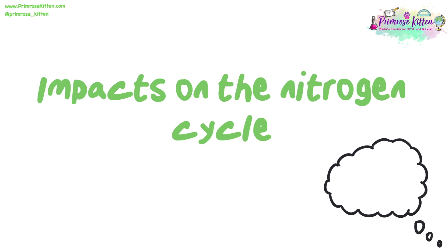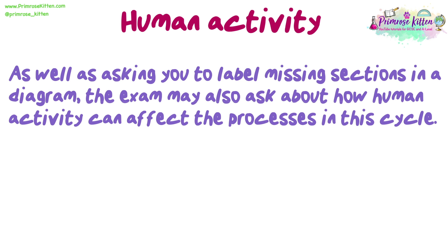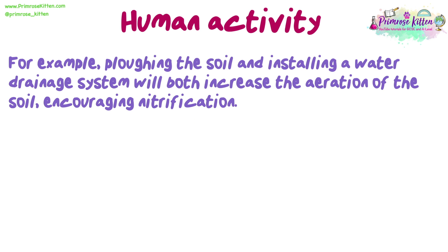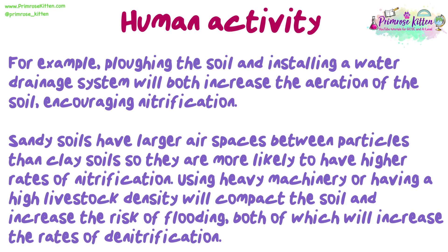What are the impacts on the nitrogen cycle? As well as asking you to label missing sections in a diagram, the exam may also ask about how human activity can affect the processes in this cycle. The human activity with the largest impact is agriculture, as many of the processes occur in the soil. For example, ploughing the soil and installing a water drainage system will both increase aeration, encouraging nitrification. Sandy soils have larger air spaces than clay soils so are more likely to have higher rates of nitrification. Using heavy machinery or having a high livestock density will compact the soil and increase the risk of flooding, both of which increase the rates of denitrification.